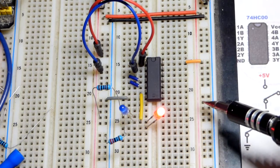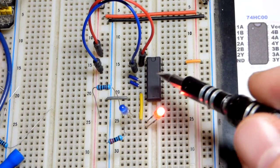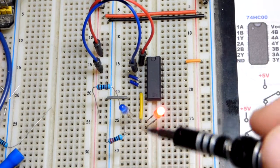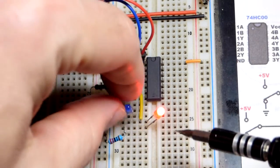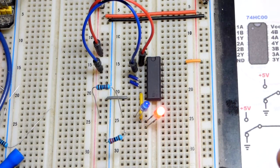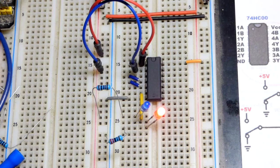The inputs that we are not using, we should tie to the positive or negative supply just to stabilize things. But ultimately, the circuit will work probably the same unless there's a lot of chaos going on. The outputs that we are using will probably work about the same right there.